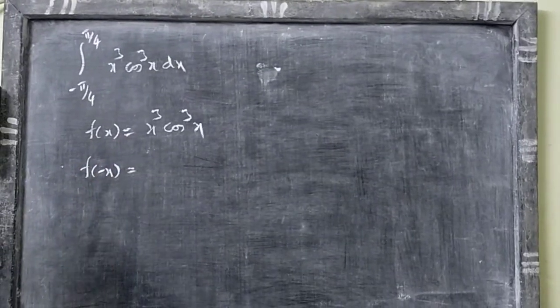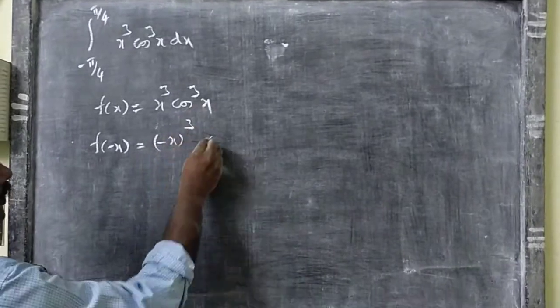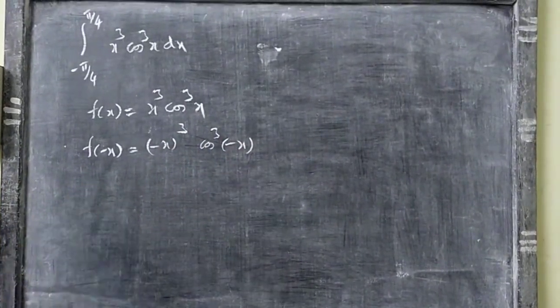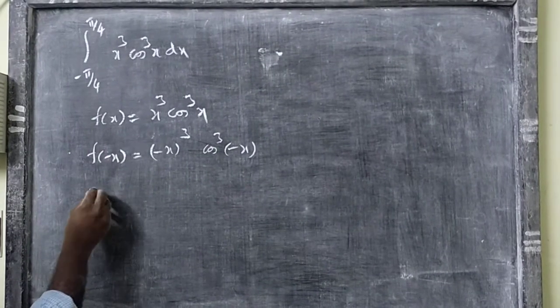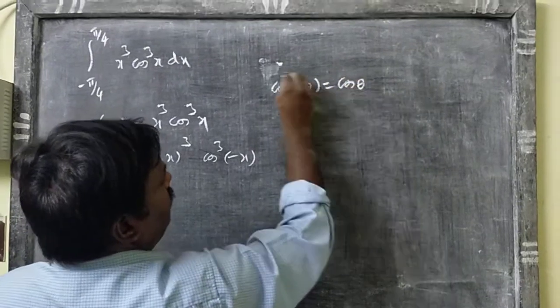For minus x, we have to find f(-x). So minus x to the power 4, cos²(-x). We have to check here cos(-θ) is equal to cos(θ).